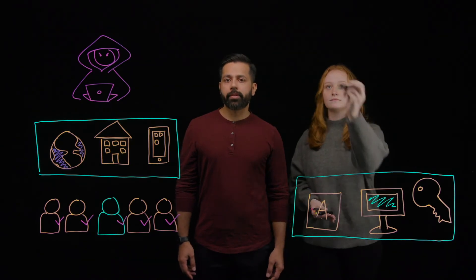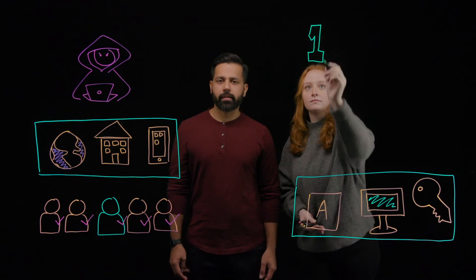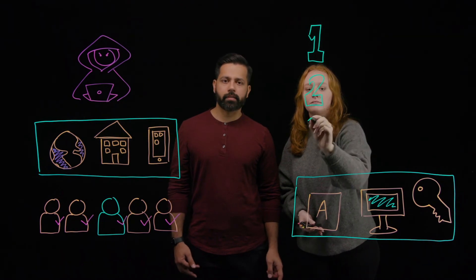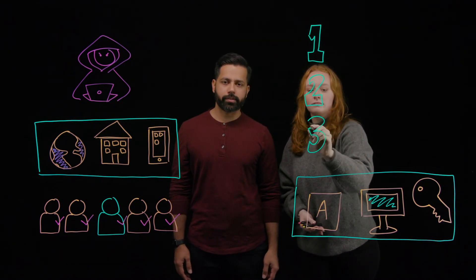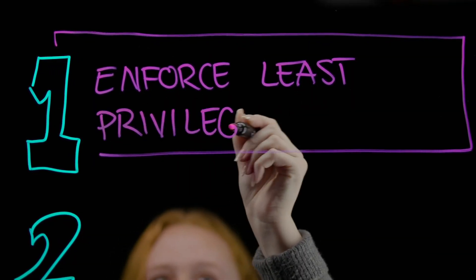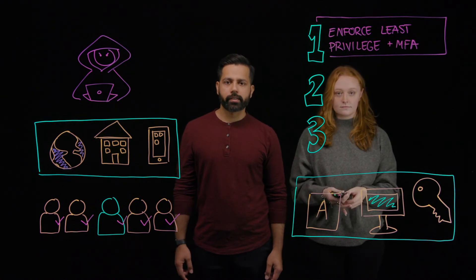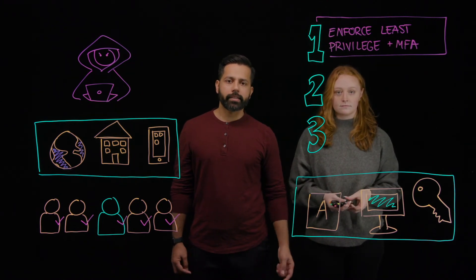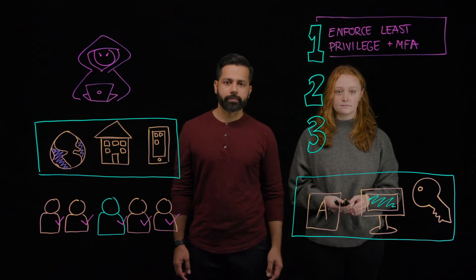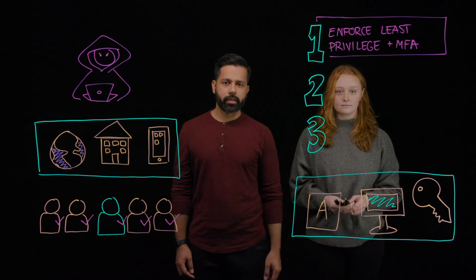If we know attackers are ramping up the sophistication and frequency of their efforts, then how can we prevent their success? Here are three solutions that security and IT leaders should be focusing on to better protect your users' identities. Enforce least privilege and MFA policies on all of your endpoints. Limit users from having full admin rights to their desktops, instead letting them escalate their privilege using an MFA prompt if they need to complete a high-risk action. Layer in MFA at the desktop login to enforce stronger authentication.